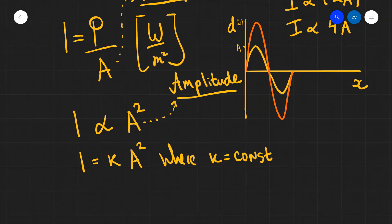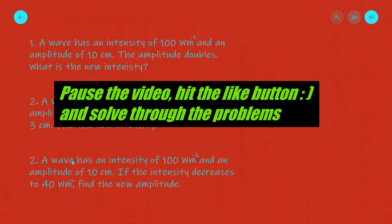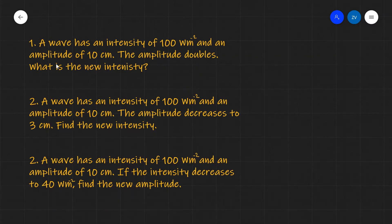Now let's have a look at those problems. I have three problems for you to attempt — a perfect opportunity to pause this video and work through them. Question 1: a wave has an intensity of 100 watts per meter squared and an amplitude of 10 centimeters. The amplitude then doubles. What is the new intensity?